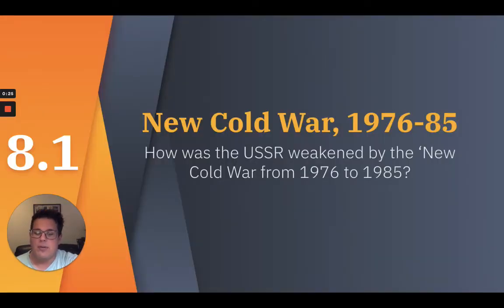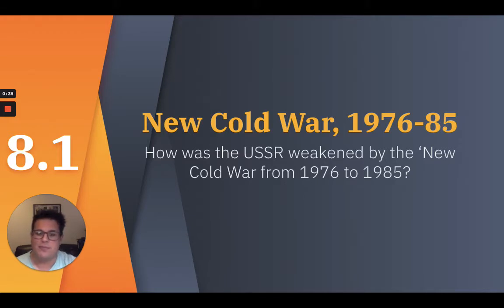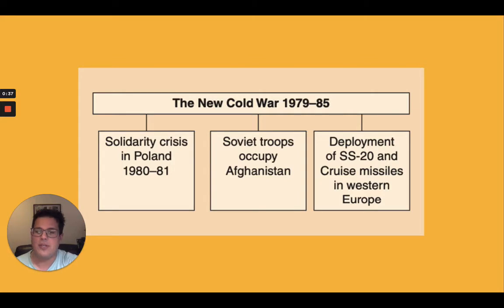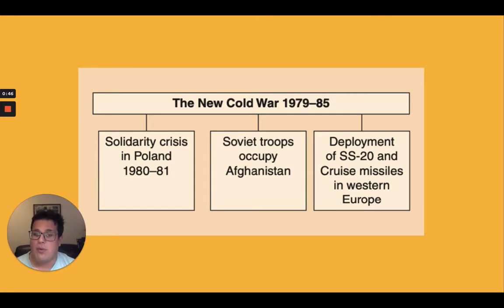To begin with, we're going to be talking about the New Cold War from 1976 to 1985. Our guiding question is: how was the USSR weakened by the New Cold War from the States? A new period of competition between the Soviet and Western blocs began in 1976. This included a renewed arms race, the Soviet invasion of Afghanistan, and various crises in Eastern Europe.